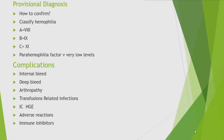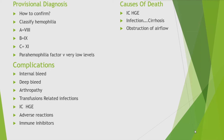Complications of hemophilia include deforming arthropathy, deep bleeds, and with transfusion — retroviral infection, hepatitis B and C. Intracranial hemorrhage is possible. Inhibitors can develop against the factors given, making them ineffective. How do hemophilia patients die? Previously, they died of hepatitis B, C, or HIV — but now screening programs have made transfusion safer. Currently, causes of death include intracranial hemorrhage, cirrhosis from hepatitis B or C, and airway obstruction from bleeding near the air passages.